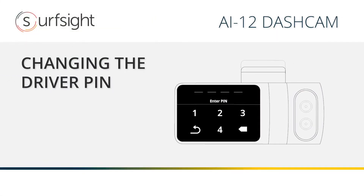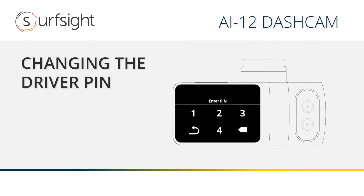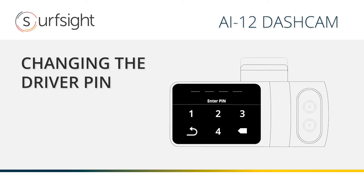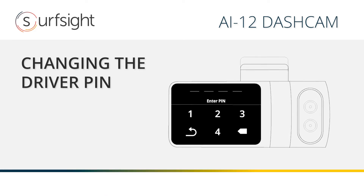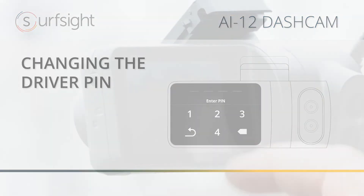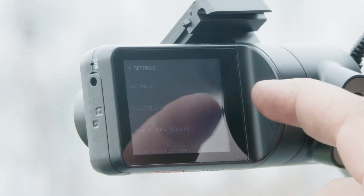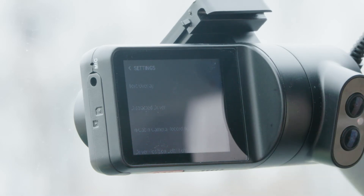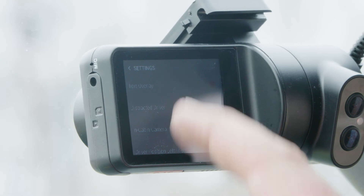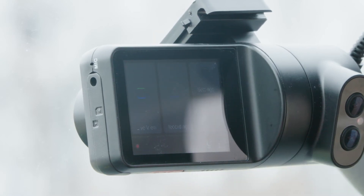The driver pin code allows you to set an additional pin code for the driver. The driver pin code limits the access to the dash cam menu. It allows access to the live video, recordings, and exit, but does not provide access to the settings menu. This way, you can limit the driver's access to the dash cam settings.